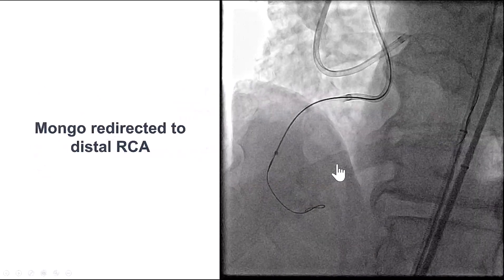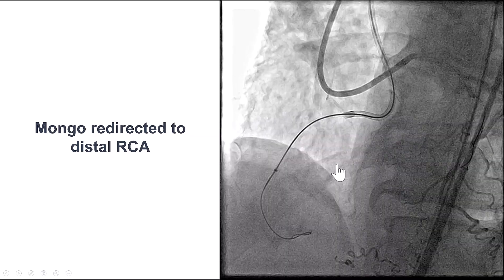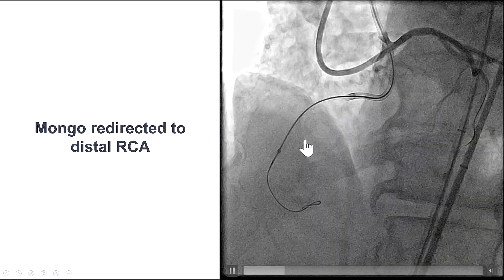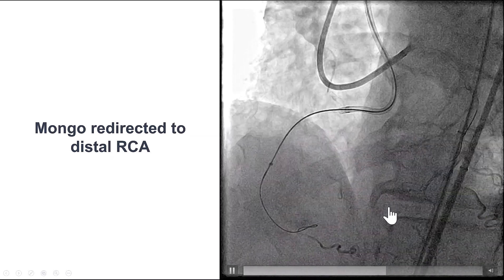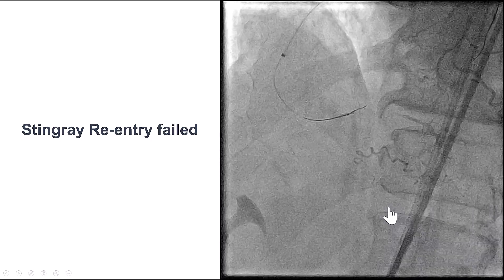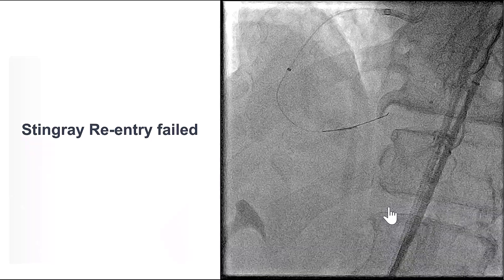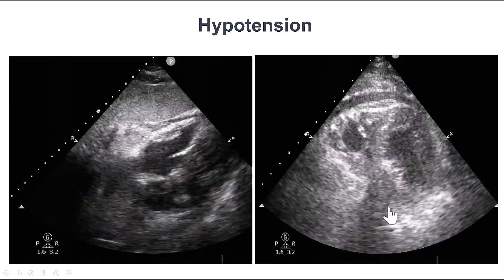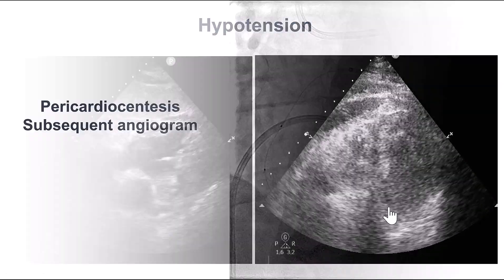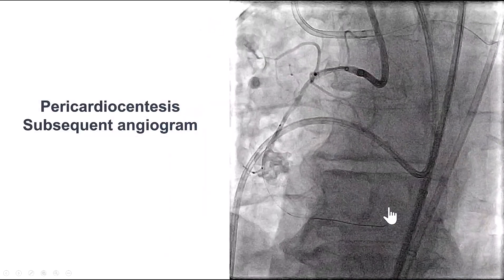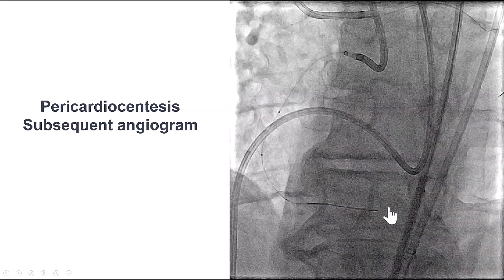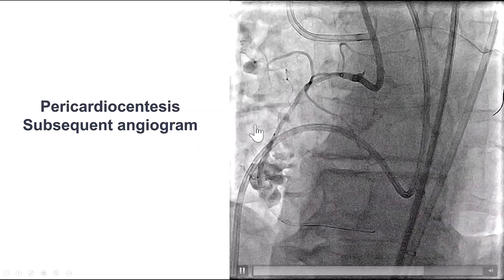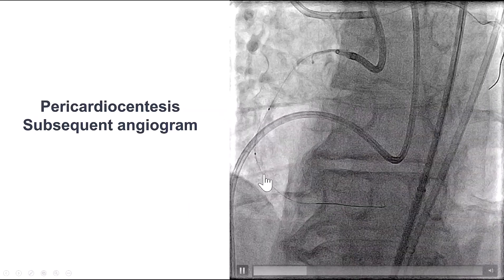As expected, there was no effusion on the echocardiogram initially. We advanced the guide extension further down with the idea of using it to tamponade the site of perforation, and then advanced the knuckle wire. We performed a re-entry attempt using the Stingray balloon, but we were unable to get into the true lumen. A few minutes later the patient developed hypotension and now had a pericardial effusion. We performed pericardiocentesis, and when we moved the guide extension back, we saw there was still a perforation — likely an intramural hematoma in the mid-right coronary artery.